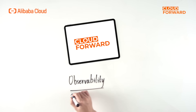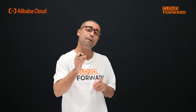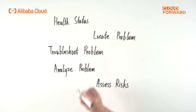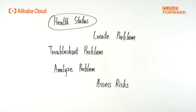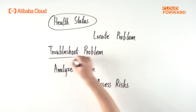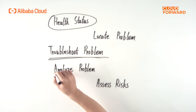What is observability? According to Wikipedia, observability is a way of measuring the internal state of a system based on its external behavior. In application development, observability helps users assess the health status of the system by observing its internal behaviors. When problems arise, it helps users locate, troubleshoot, and analyze problems.